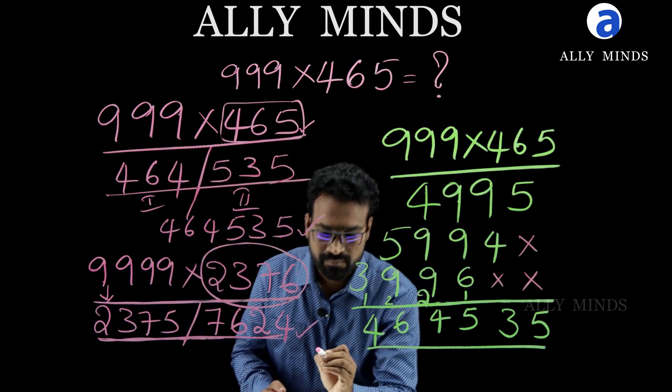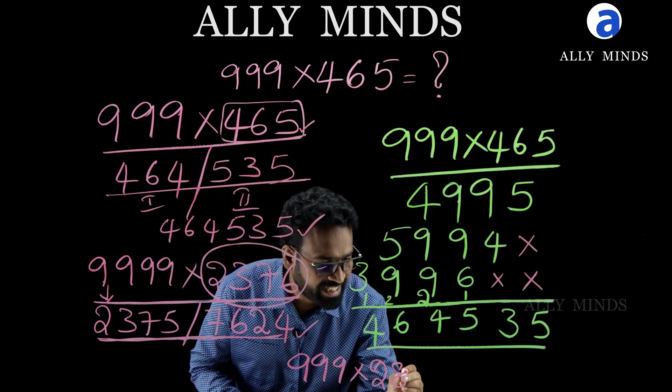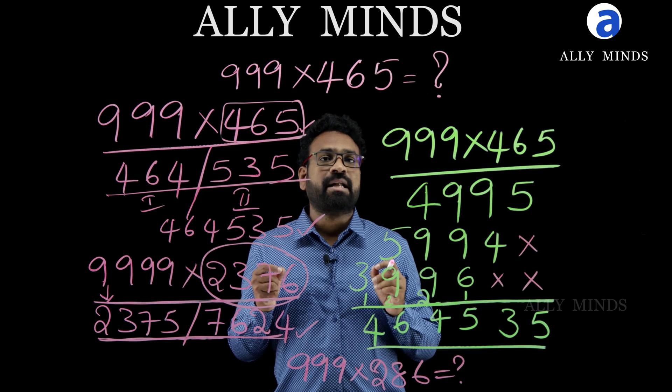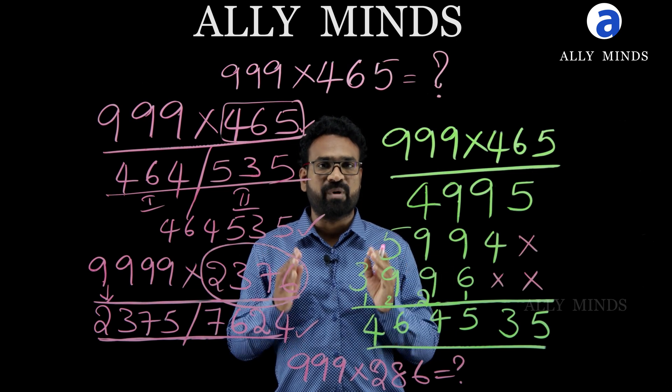Now, triple nine into 286. Comment this answer. Now, to learn more methods like this, download the app AliMinds from the Play Store.